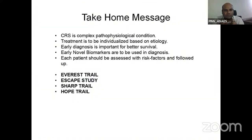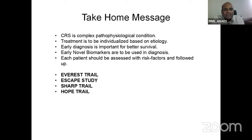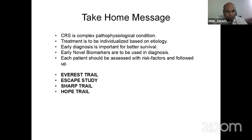Summarizing cardiorenal syndrome — it is a complex pathophysiological condition. Treatment must be individualized based on etiology. Early diagnosis is important for better survival. Novel biomarkers can be used for early diagnosis. Each patient should be assessed with risk factors and followed up. There are four trials which have been studied in cardiorenal syndrome which can be discussed further if time permits.